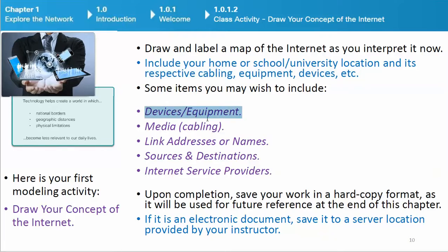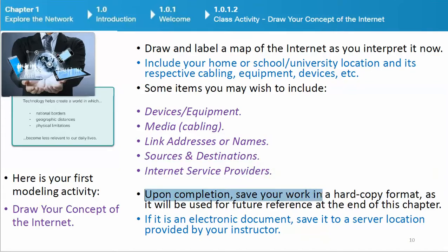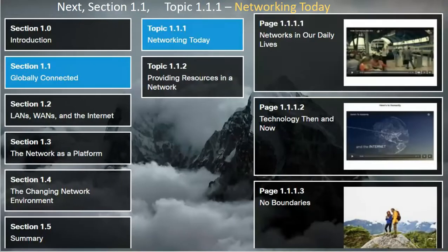Some items you may wish to include: devices, equipment, media, cabling, link addresses or names, sources and destinations, and Internet service providers. Upon completion, save your work in a hard copy format, as it will be used for future reference at the end of this chapter. If it is an electronic document, save it to a server location provided by your instructor. Be prepared to share and explain your work in class.